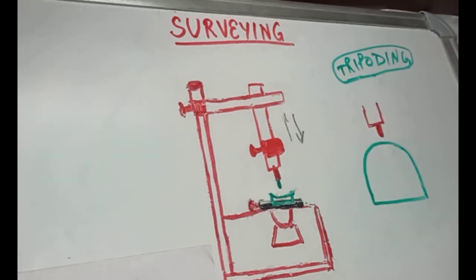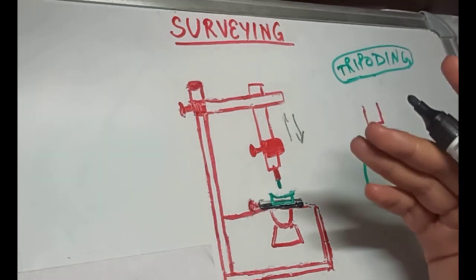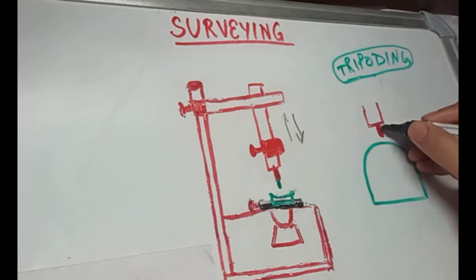So, how we do tripodding? First of all, the carbon marker is fixed to the mandrel. So, this is the mandrel, this is the surveying arm and the carbon marker is fixed to the mandrel.